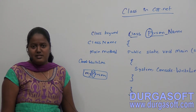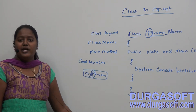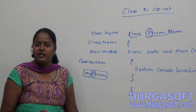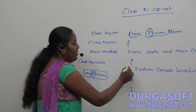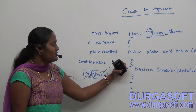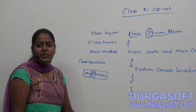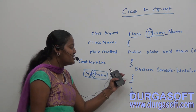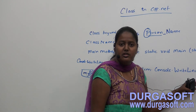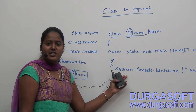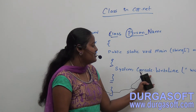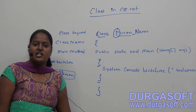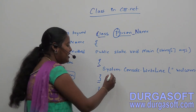Next we have the main method. The main method is the entry point of the application. The compiler first searches for the main method to start the application. We have an open brace as the entry point and a close brace as the exit point. The main method is used to create objects for other classes and invoke other class attributes and methods. Here we have System.Console.WriteLine - System is the namespace, Console is the class, and WriteLine is the predefined method.